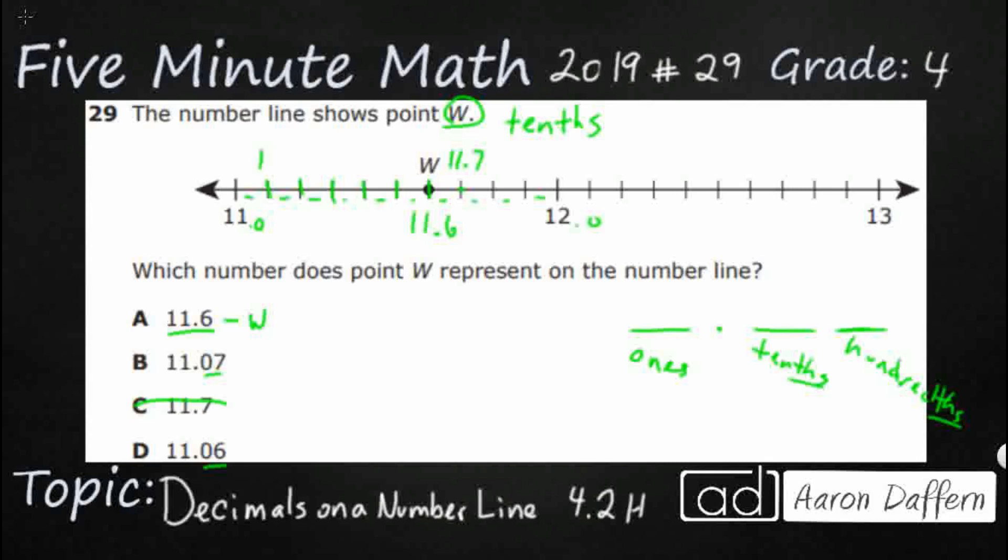We've got an eleven point one right there. And if we wanted to figure out where our eleven point oh six and oh seven fit, what we need to do is we actually zoom into that right there. I'm going to zoom into this right down here and I'm gonna make my own little number line right here. I've got my eleven point zero and my eleven point one. And another way to think of our eleven point one is we can think of it as an eleven point ten. So one tenth is the same as ten hundredths.